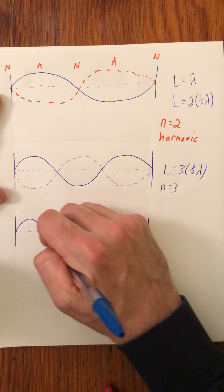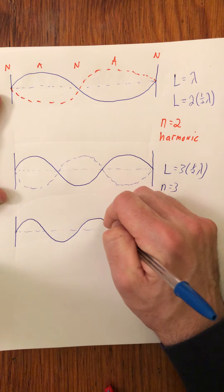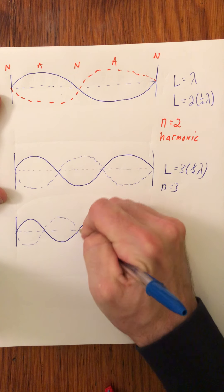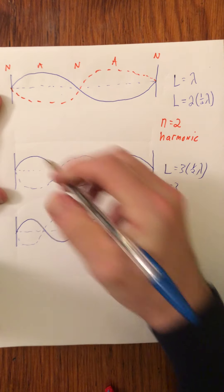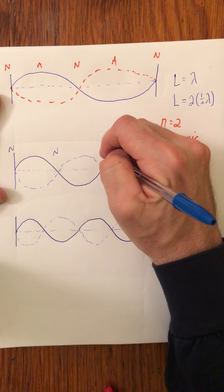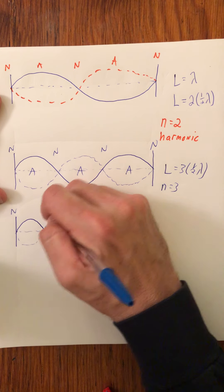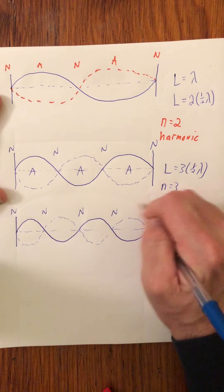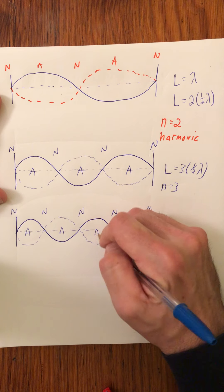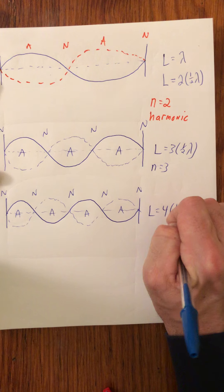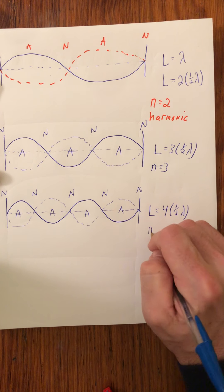And once again, just to show this, hopefully you start seeing the pattern evolve. Draw where the wave is half a cycle later. Actually, let me just draw in my nodes and antinodes for all of these. Antinode, antinode, antinode. Node, node, node, node, node. Antinode, antinode, antinode, antinode, antinode. Right here, L is equal to four half wavelengths. The n equals four.